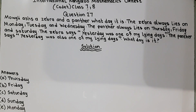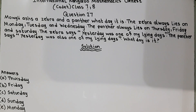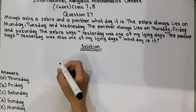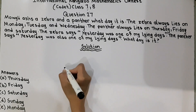So one day Mowgli asked the zebra and the panther what day is it? The zebra used to lie on Monday, Tuesday, Wednesday and the panther used to lie on Thursday, Friday and Saturday. They both said yesterday was one of our lying days. So it's a little bit confusing, so we will do it in written form.